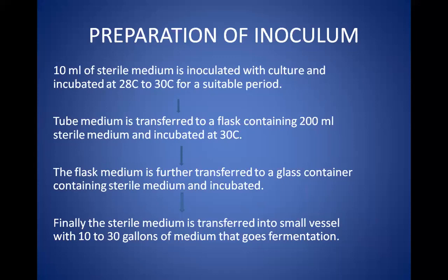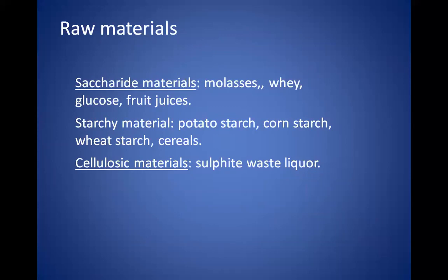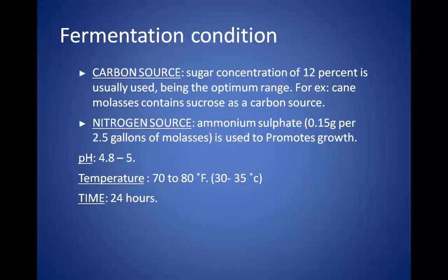The raw materials used can be of three types: saccharide materials, which include molasses, whey, glucose, and fruit juices; starchy materials such as potato starch, corn starch, wheat starch, and other cereals; and cellulosic materials, usually sulphide waste liquor. The carbon source used is typically a concentrated sugar concentration of 12%, which is the optimum range. Cane molasses contains sucrose as the carbon source.